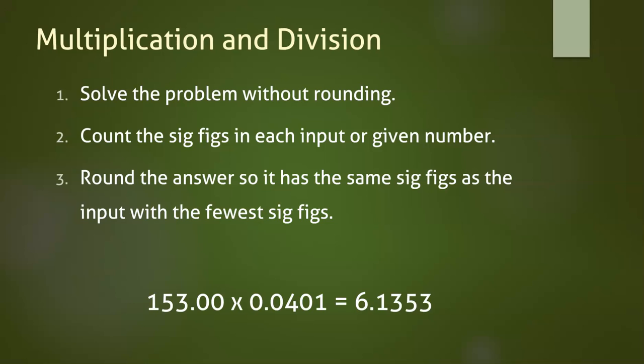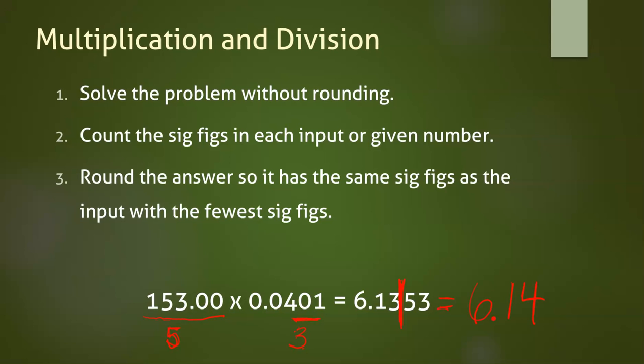For example, if you were to multiply 153.00 by 0.0401 on a calculator, you would get 6.1353 as your answer. 153.00 has five sig figs. The trailing zeros count because there is a decimal. 0.0401 has three sig figs. The leading zeros never count, but the trapped zero does. Since three is less than five, your answer should therefore have three sig figs. It's usually helpful to draw a line after that three because that tells us where we need to round our answer.